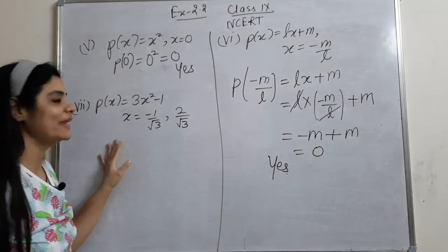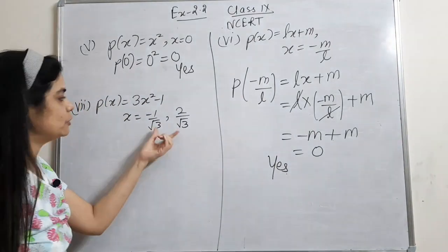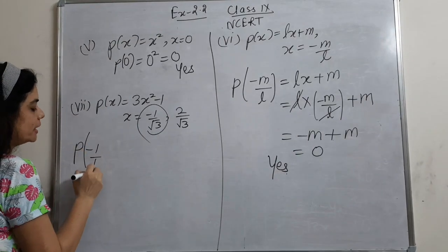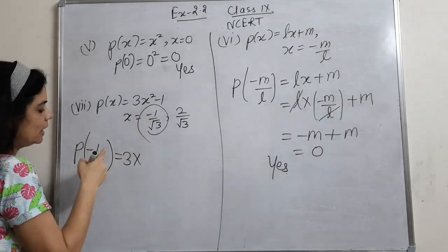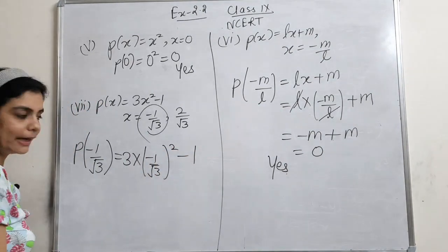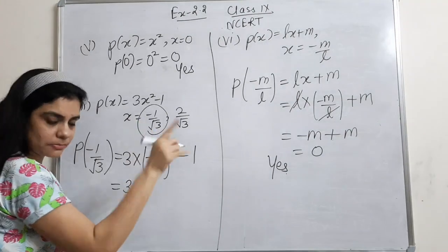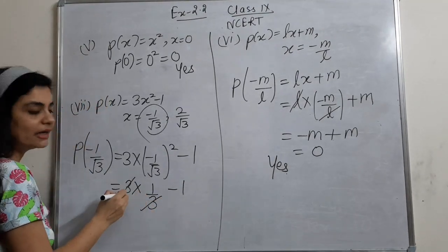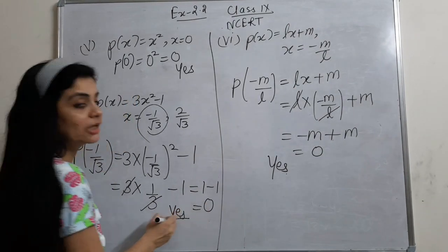Now the 7th part: two values given. First, check x = -1/√3 in p(x) = 3x² - 1. Put it in: 3 into (-1/√3)² minus 1. The minus sign disappears due to squaring; (1/√3)² = 1/3. So 3 into 1/3 minus 1, the 3s cancel, giving 1 minus 1, which is 0. So yes!